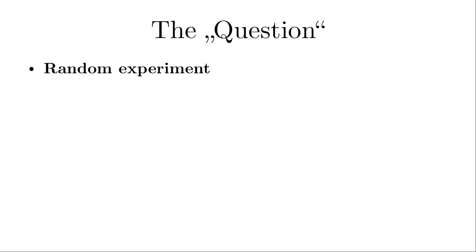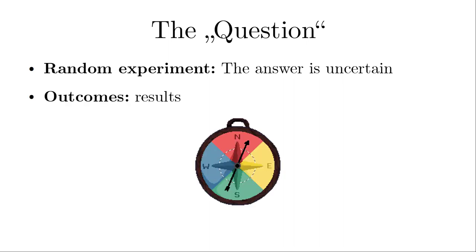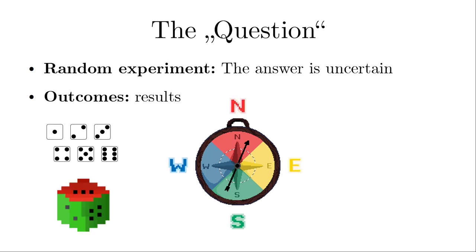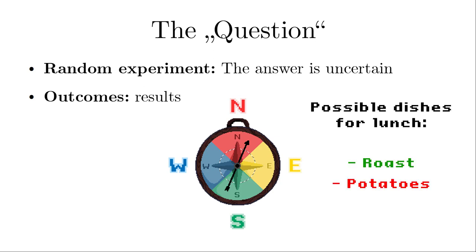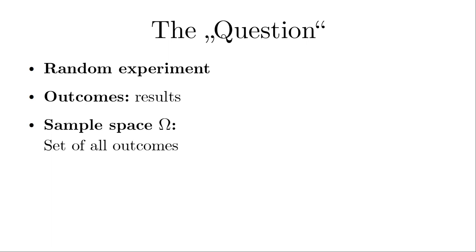All these problems have one aspect in common. The answer is uncertain for whatever reason. Each question has a well-defined set of results, which we call outcomes. Like the four compass directions, north, east, west, and south. Or the number of pips on the die. Or the possible dishes for lunch, like roast or potatoes. Or the whereabouts of Captain Bayes, like in the ship's galley, on deck, and so on. We call the total set of possible outcomes the sample space, and we denote it by capital Omega.